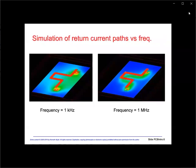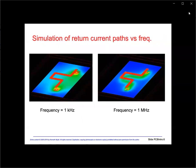Here's a simulation of this concept with the return conduction current in green. For the one kilohertz example on the left, we see the return current is spread out and basically travels from the load directly back to the source. In the one megahertz example on the right, we see the return current located directly underneath the circuit trace. This will be very important when we partition our circuit board between analog and digital circuitry.